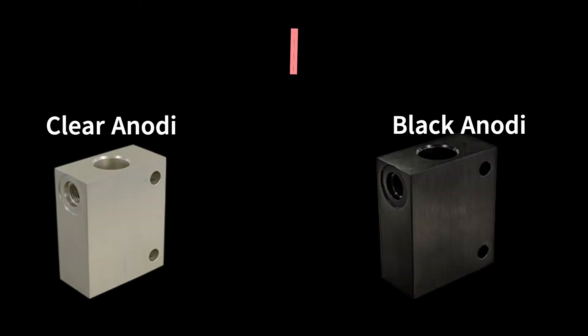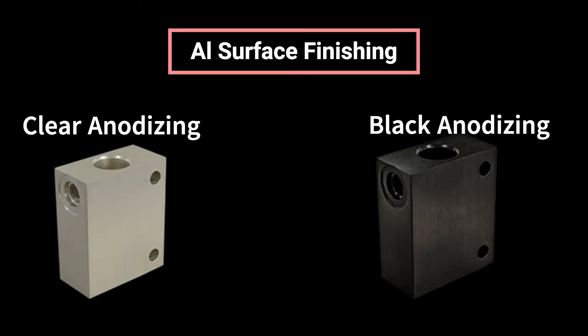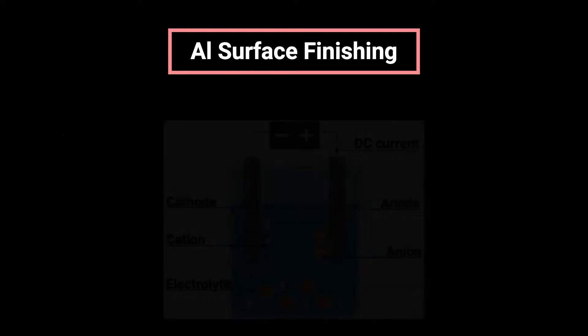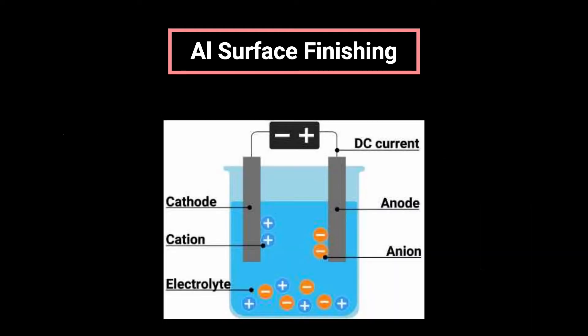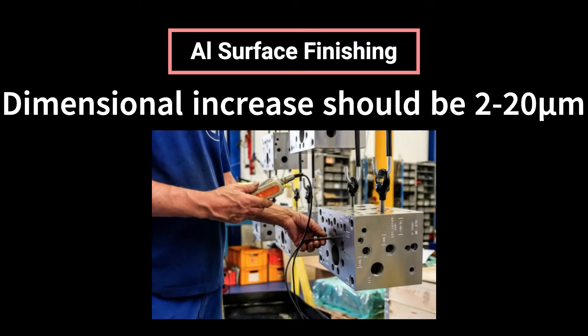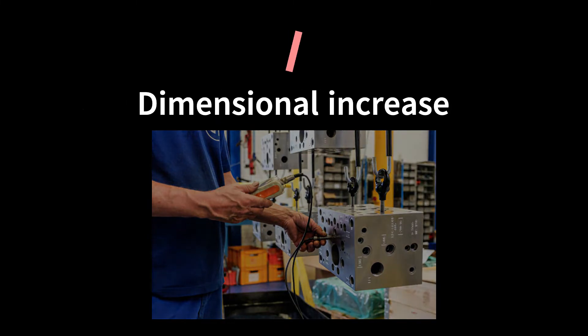After selecting the material type, another important consideration is surface finishing. For aluminum material, options include clear anodizing and black anodizing. Both are electrolytic processes that provide increased corrosion resistance. The dimensional increase on the original surfaces per side shall be between 2 and 20 micrometers.